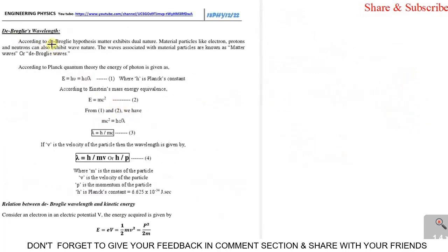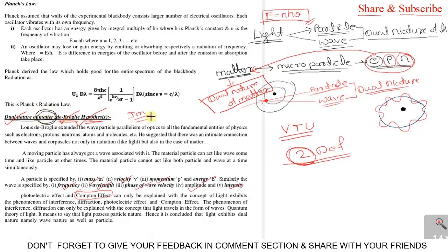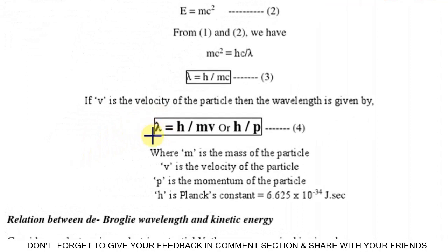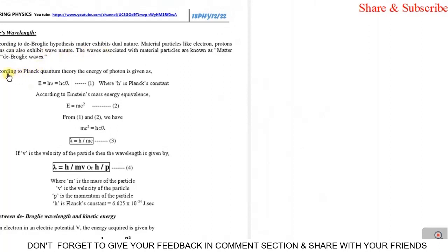Now let us see de Broglie wavelength. Previously we said matter behaves as both a wave and a particle. To support that, we need to give one key equation: lambda = h / p, or lambda = h / (m × v). Here lambda is associated with wave nature and m × v (momentum) is associated with particle nature, and h is Planck's constant. In a single equation we covered two important things — wave nature as well as particle nature.